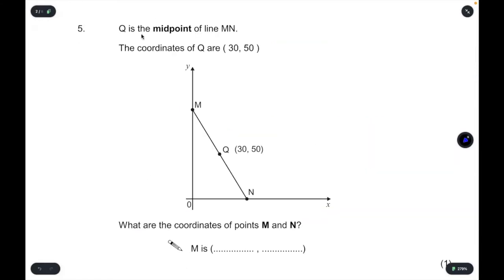Question 5. We are told that Q is the midpoint of the line MN. The line MN is the line that goes from the point M to the point N. So this line has the midpoint, so the halfway point of Q. And the coordinates of Q are 30 for the x-coordinate and 50 for the y-coordinate.